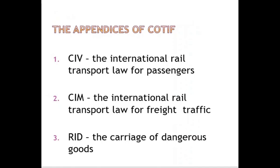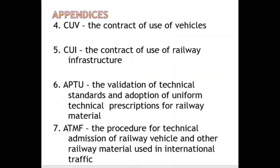There are about seven appendices to COTIF. The first one is CIV, which covers the international rail transport law for passengers. The international rail transport law for freight traffic, which freight forwarders are much concerned about, can be found in CIM. RID is the regulation that covers the carriage of dangerous goods, and freight forwarders have a lot to do with that.